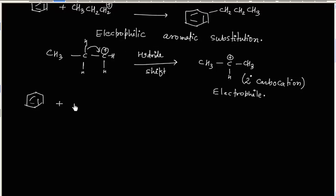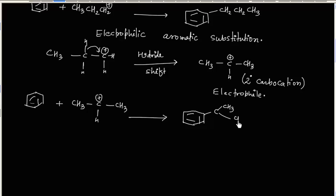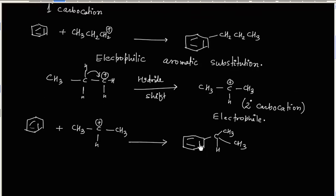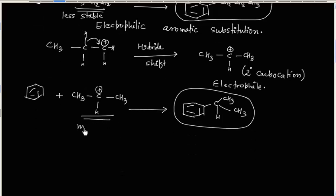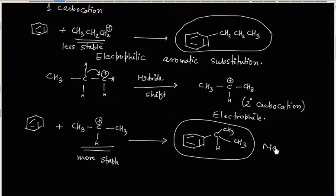The benzene ring reacts with this 2° carbocation via electrophilic aromatic substitution, giving the final product. We have 2 products: one formed from the 1° carbocation (less stable) and another from the more stable 2° carbocation. The product from the more stable carbocation is the major product, and the other is the minor product.